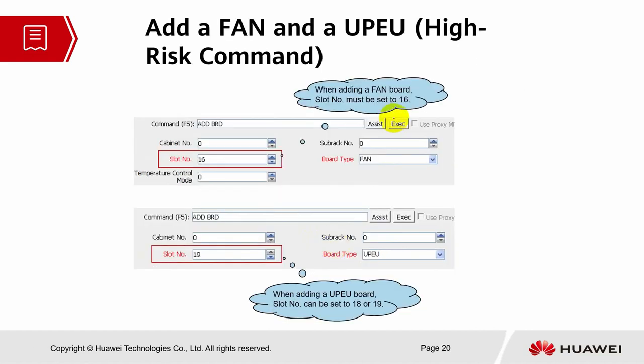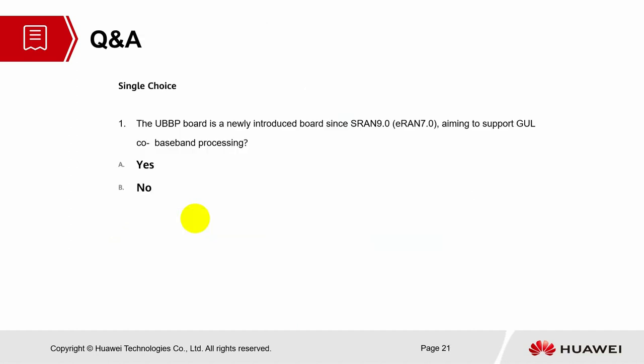To add a fan and UPEU: usually by default they are already added. For the first base station, you don't have to add the fan or UPEU unless you find that they are missing — even though the hardware is present, sometimes it might be missing from the configuration, but in most cases by default they are added already. So you don't have to run this command; it's actually for the fan and UPEU.